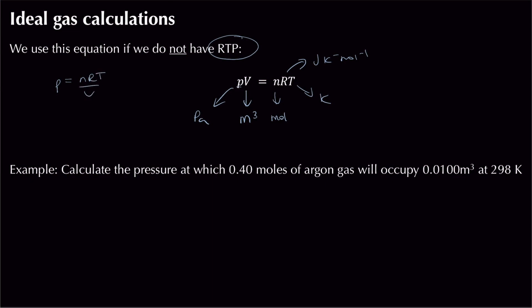To find volume: V = nRT/P. To find the number of moles — a common one — divide both sides by RT: n = PV/RT. The gas constant gives R = PV/nT. For temperature, divide both sides by nR: T = PV/nR. Those are the five possible rearrangements.